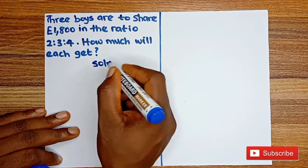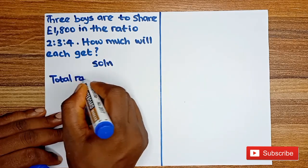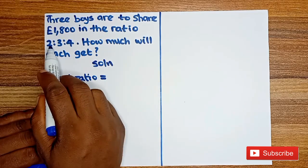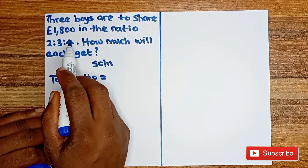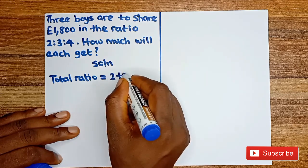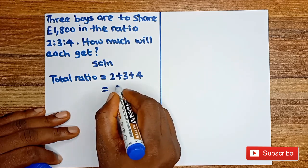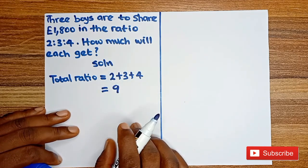Solution: total ratio is equal to these ratios: 2, 3, and 4. So we add them together. We have 2 plus 3 plus 4, which will give us 9. So the total ratio is 9.